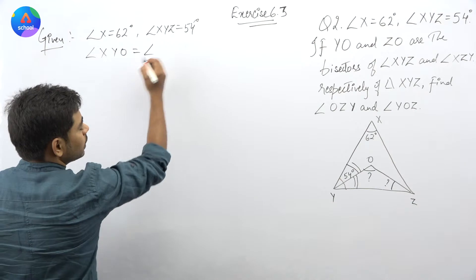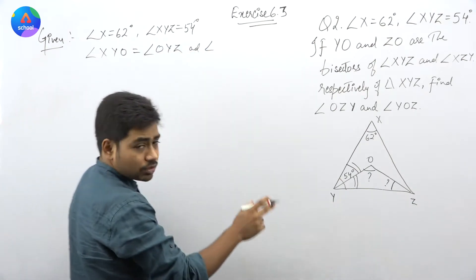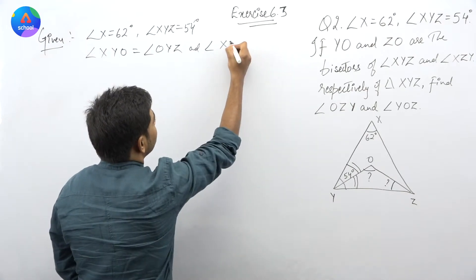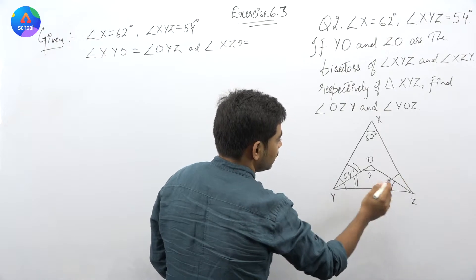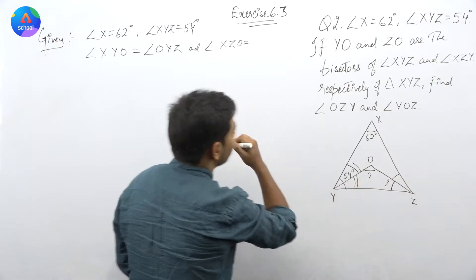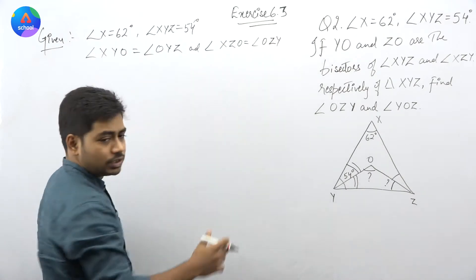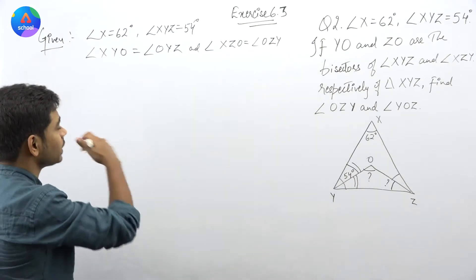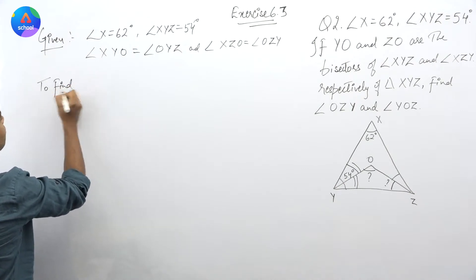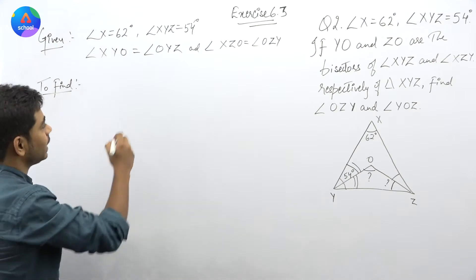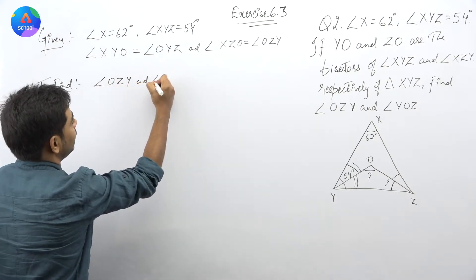Is equal to angle OYZ। And angle XZO — ये कौन सा angle हो गया? ये वाला angle हो गया जो की equal है angle OZY के। So ये हो गया angle OZY के equal। ये हमारा given हो गया, क्योंकि हमें bisector से दे रखा है। To find की बात करें — जो की हमें find करना है — angle OZY और angle YOZ।